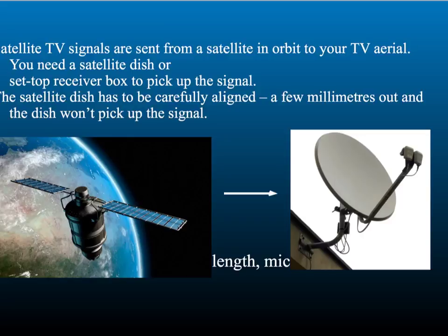For the best quality image your aerial needs to be pointing towards the transmitter. Satellite TV works in a similar way but there is one crucial difference. Instead of the TV signal being sent from a transmitter tower to your aerial, the signal is beamed down from a satellite in orbit. For this, high frequency microwaves are used. They have a shorter wavelength than normal TV signals. To receive a signal from a satellite you need a satellite dish; a normal TV aerial is not sensitive enough to pick up the signal.